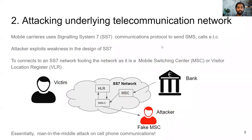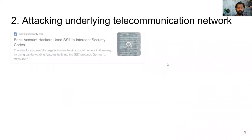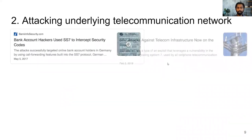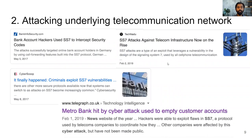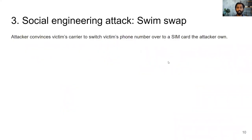The second kind of attack targets the underlying telecommunication network — essentially a man-in-the-middle attack on the telephone communication network, so all messages sent to the victim go through the attacker's device. Surprisingly, there are many reports of this attack today. The third kind of attack is a social engineering attack called SIM swap, where the attacker convinces the victim's mobile carrier to switch the victim's phone number to a SIM card that the attacker owns.